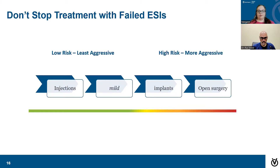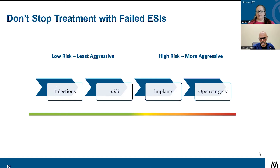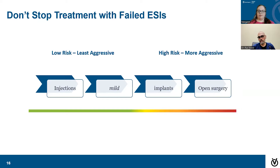This slide shows the way things are now in terms of where MILD falls into the treatment regimens. Before, we would do injections, and if they were of no benefit we were either talking about doing some type of implant such as a spinal cord stimulator or interspinous spacer, or sending patients off for open surgery. Now, if injections are of no benefit, certain patients will be a candidate for the MILD procedure prior to having to discuss more aggressive types of procedures for their back pain.